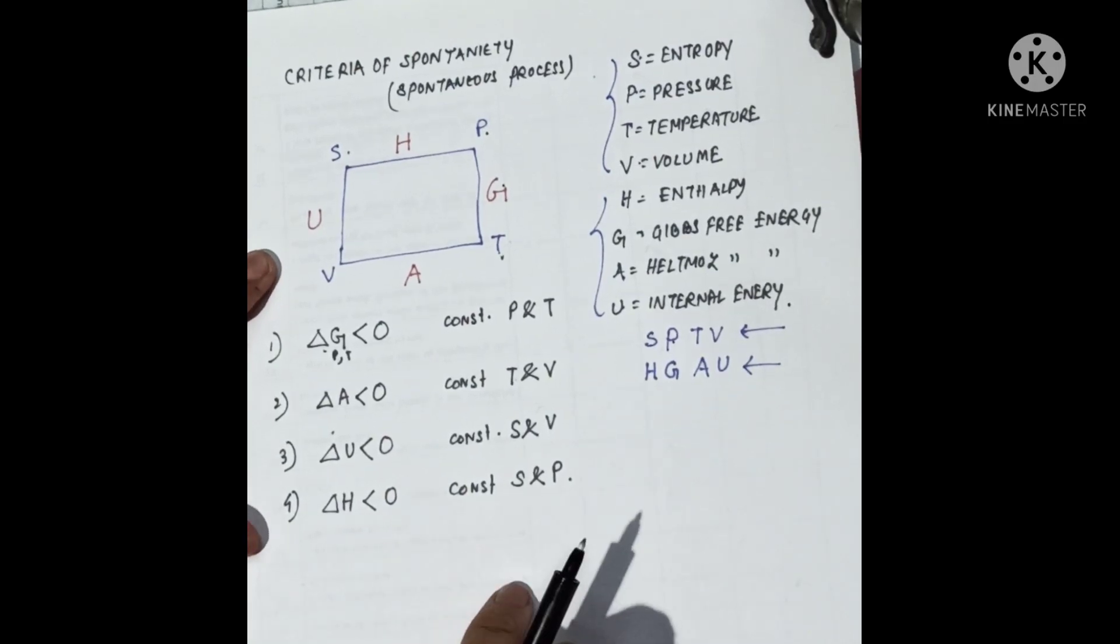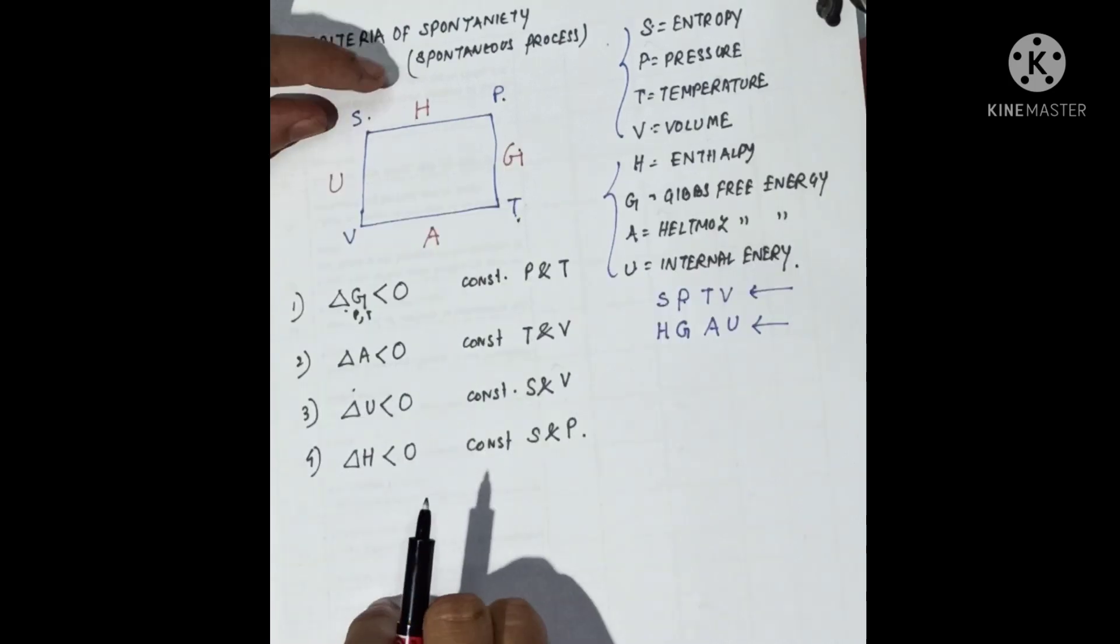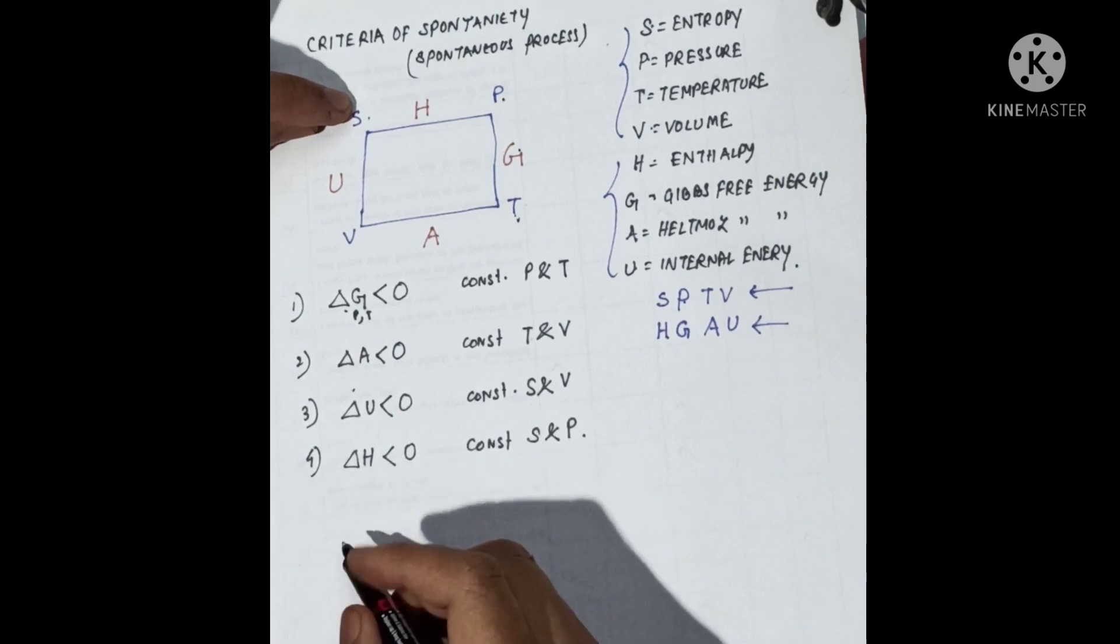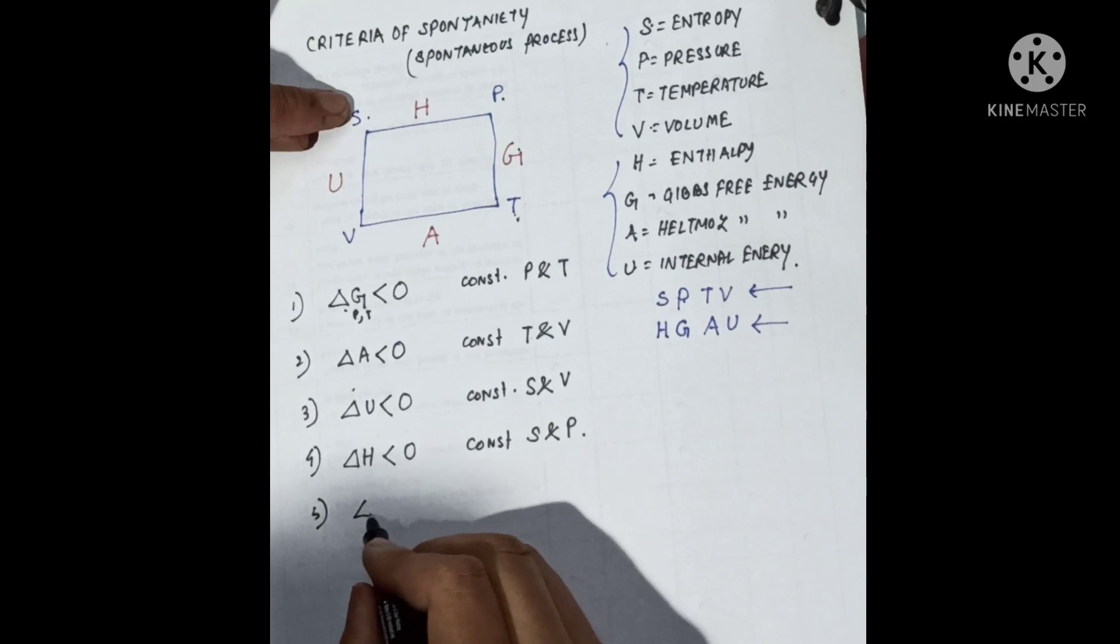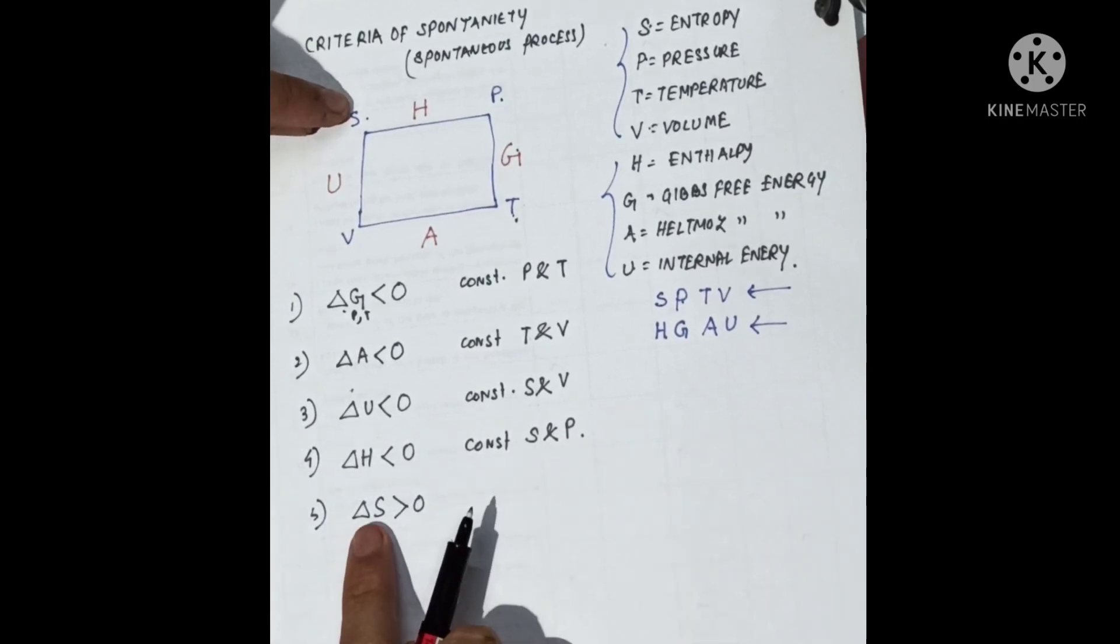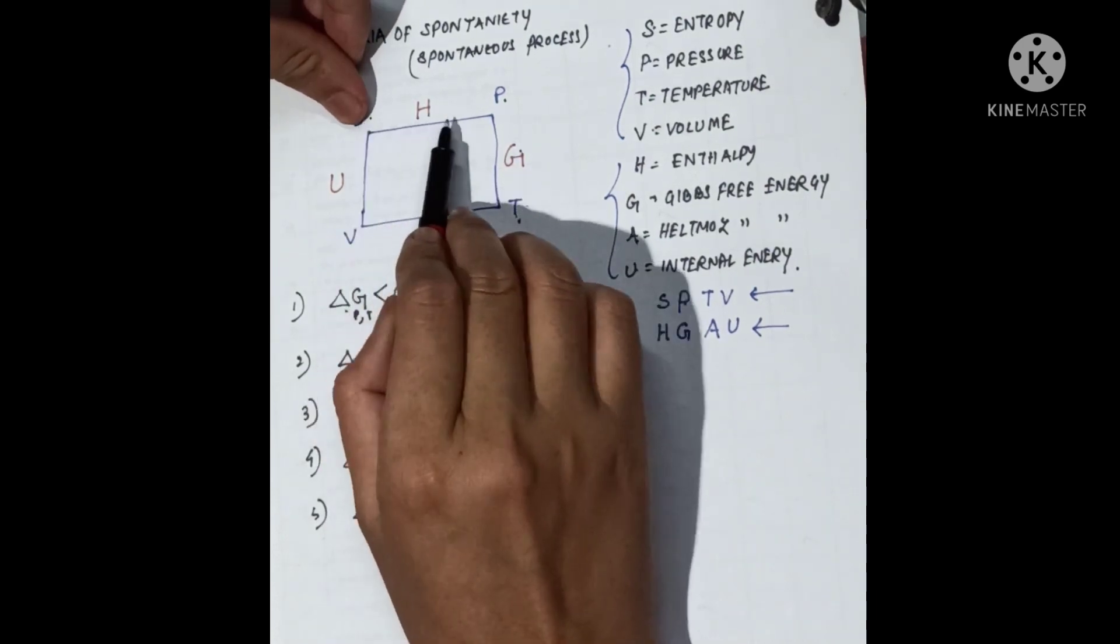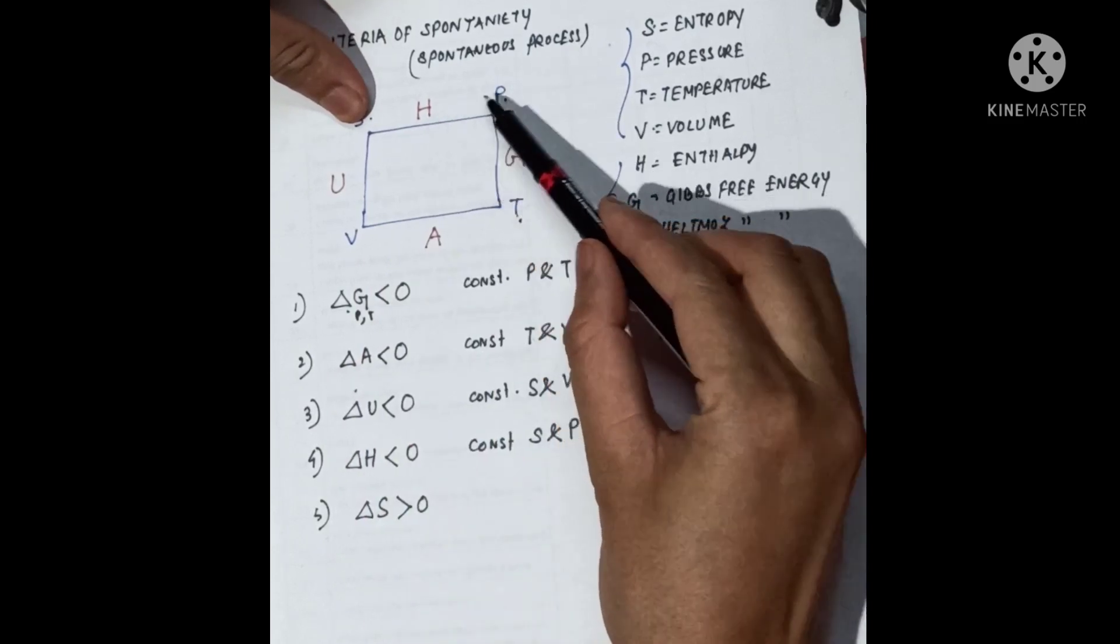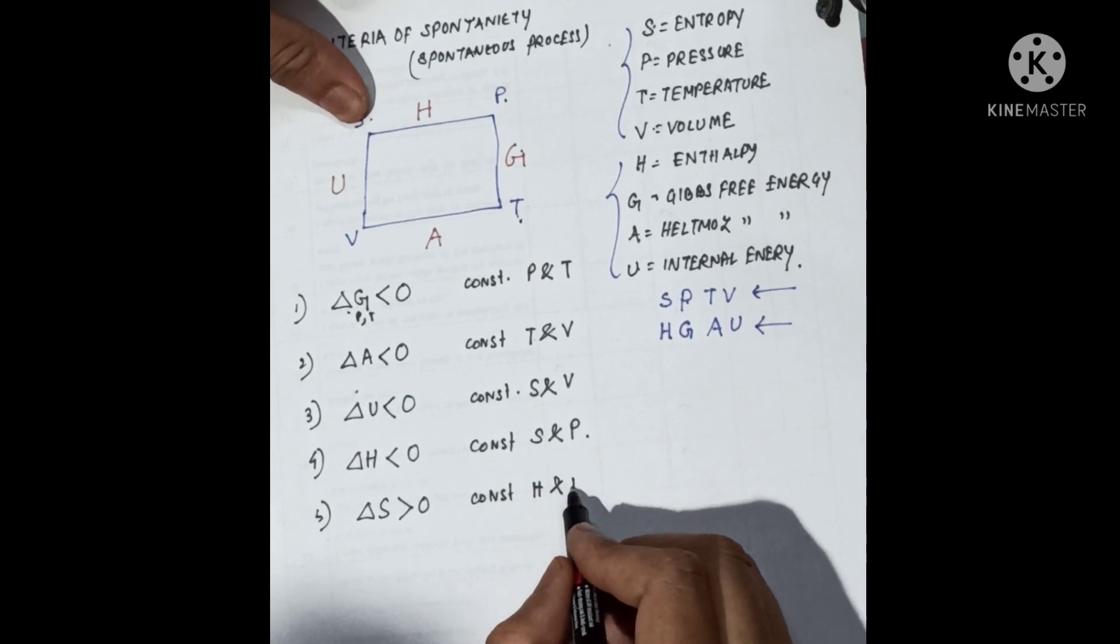The next condition: a spontaneous process is a process in which there is increasing entropy. If I consider this condition, then the entropy should be greater than zero. I'll write the fifth condition: delta S greater than zero. Remember, for entropy, the change in entropy should be greater than zero. The condition is delta S greater than zero at constant H and P.